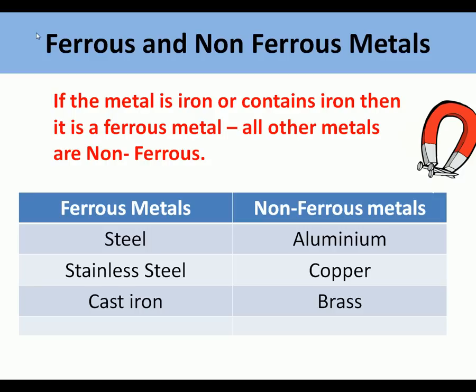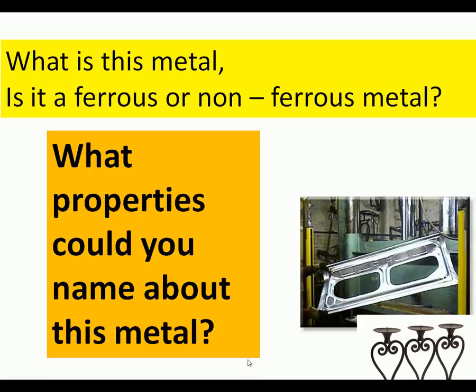If a metal contains iron, it is a ferrous metal; all other metals are non-ferrous. If you can remember these six metals you'll be doing well: steel, stainless steel, cast iron — and the non-ferrous: aluminium, copper, and brass. That's really all the metals you need to know.